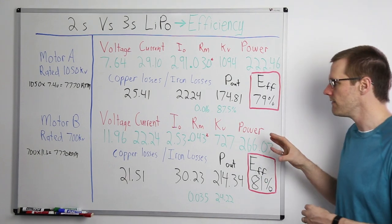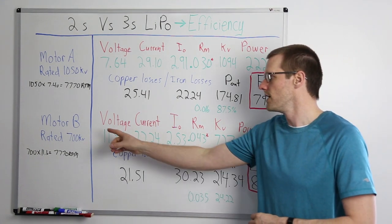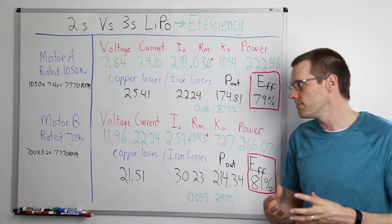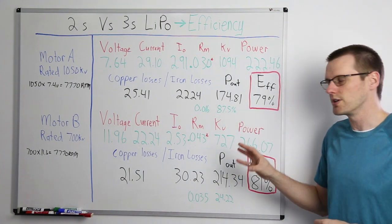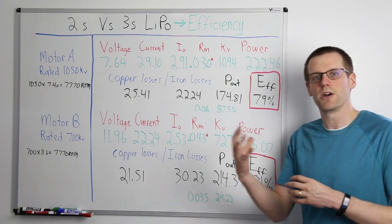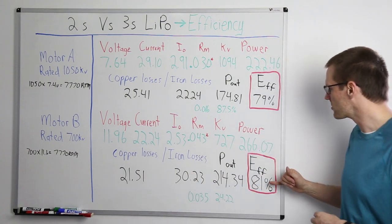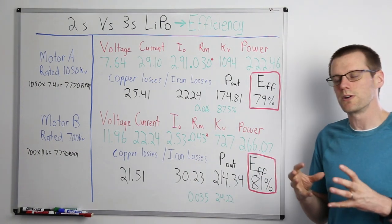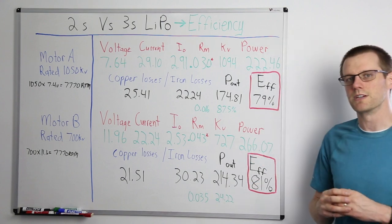Now, all we need to do from here is take this value, divide it by our 266 watts, and we get a total efficiency of 81%. Now, there's a couple interesting things from this result. Obviously, the first one is, even from a theoretical approach, our 700 kV motor comes out as a more efficient solution from the perspective of power in versus power out. And that is going to be by a difference of 2% from each one of these examples.